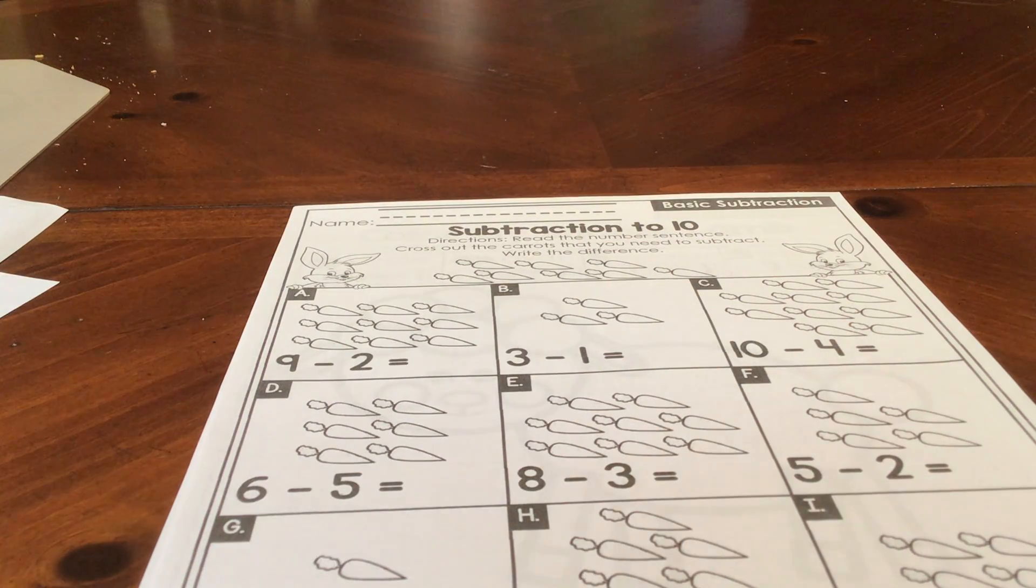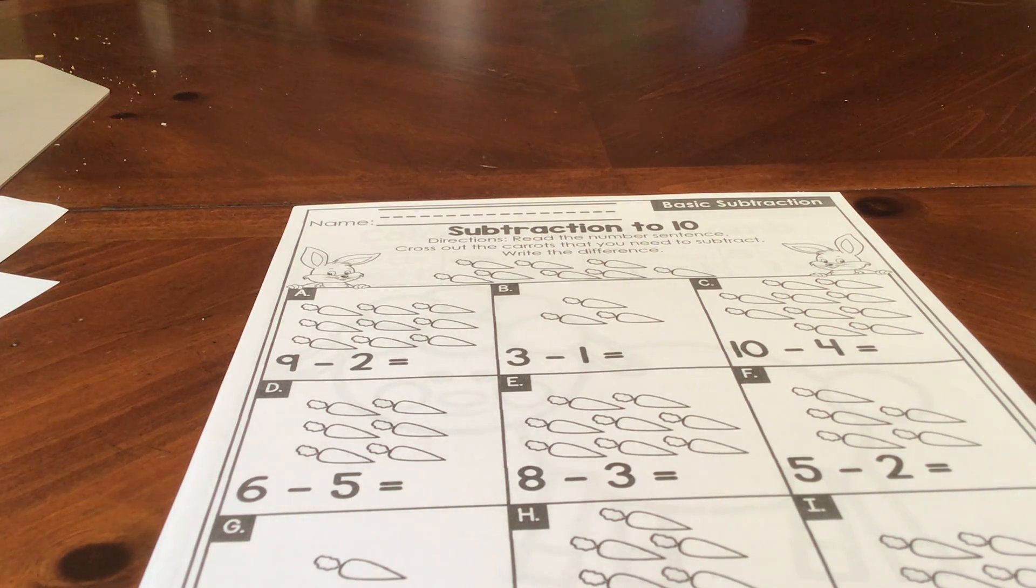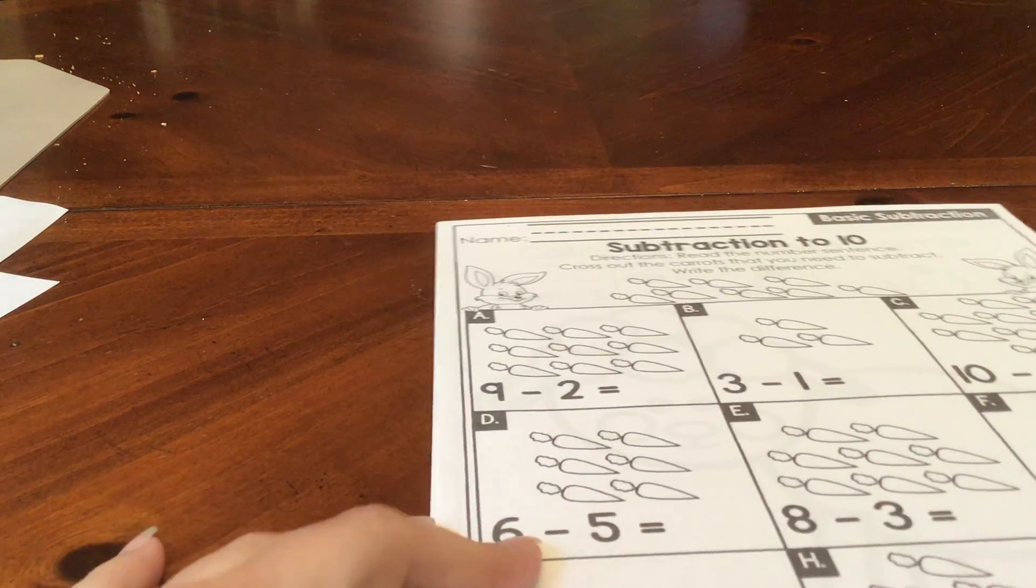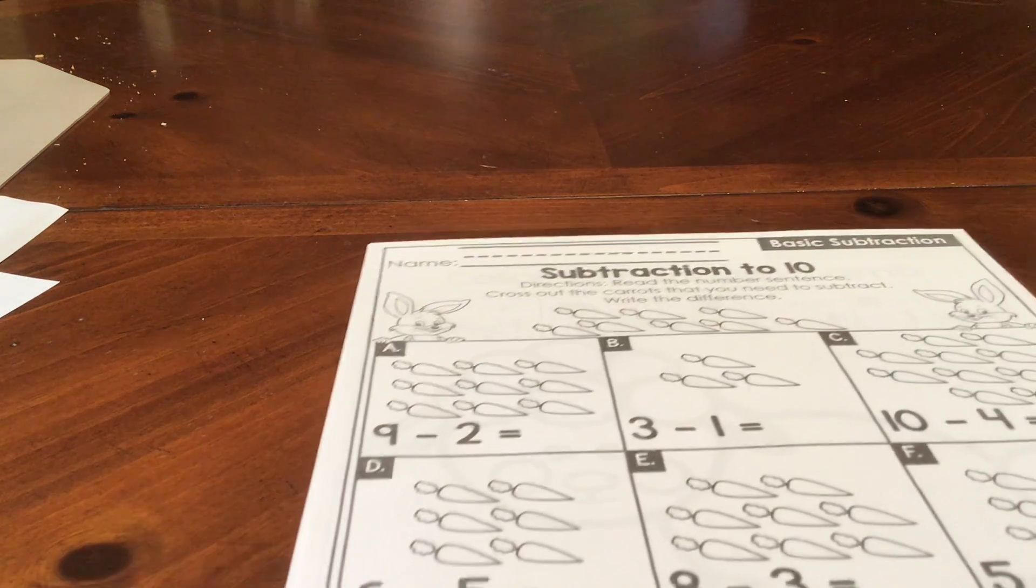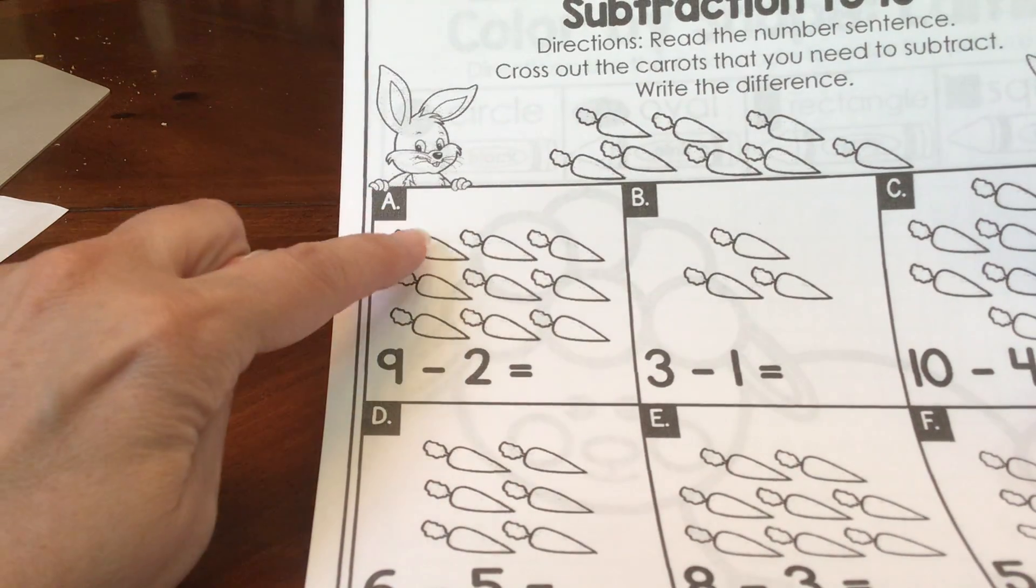We're going to start with subtracting. That means that we have a group that we're breaking into parts or that we're taking something away from. Let's see. These are carrots. We're going to start with, recount the pictures in your box first.